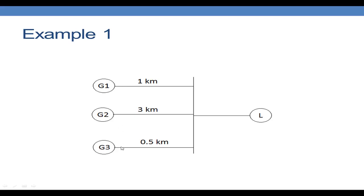Here we have three different transmission costs, and the transmission cost increases as the distance between the source and the load increases. When we take economic factors into account, most of us will select generator G3, because when fuel costs are all the same, the transmission cost is much less for G3 compared to G2 and G1. Utilities will opt to start G3 to provide this load, as it is the most economic selection.